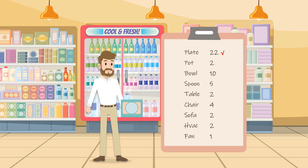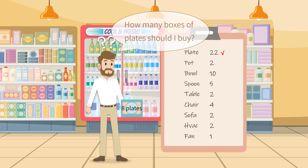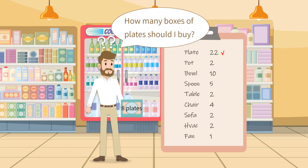According to Uncle Josh's shopping list, he should buy 22 plates in all. The porcelain plates he picked were sold in boxes of 8 plates. Uncle Josh wondered how many boxes of plates he should buy.